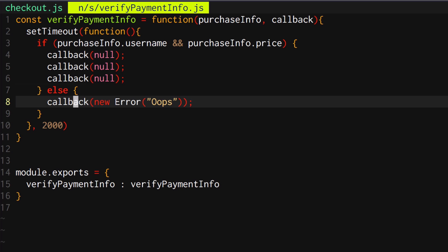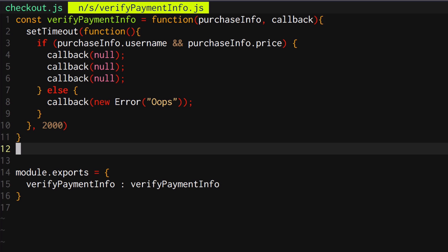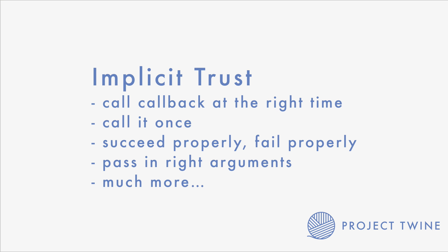Admittedly this code is kind of contrived, but this happens all the time in production. This is the problem with inverting control with callbacks. When we implicitly trust Stripe's 'verify payment information', we expect it's going to use our callback properly — we're taking a huge leap of faith saying we believe they're going to call it at the right time, in the right manner, not too many times, with the right arguments. There's a lot of trust going on between me as the engineer of the e-commerce store and the Stripe library.